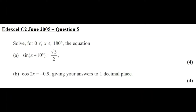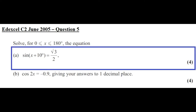Hi there. In this video I'm going to do a past paper question on trigonometry. So let's take a look at the question. The question reads: solve for all of the angles x in degrees between 180 degrees and 0 degrees included. The equation in part A reads: sin(x + 10°) = √3/2.